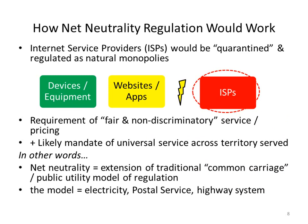Baxter's Law would essentially be applied to broadband networks through net neutrality regulation. Internet service providers would be quarantined and regulated as natural monopolies, whereas websites, applications, devices, and equipment would be largely left deregulated. There would be a requirement for ISPs of fair and non-discriminatory service and pricing, and likely some sort of mandate for universal service across the entire territory that the ISP served. In other words, net neutrality regulation is really an extension of traditional common carriage and public utility style regulation. The model would be some sort of hybrid between electricity, our postal service, and the highway system.